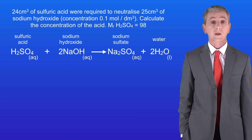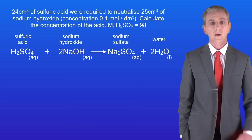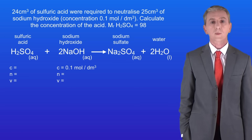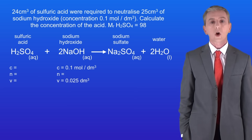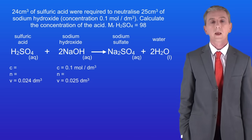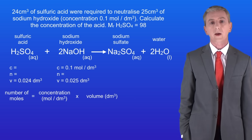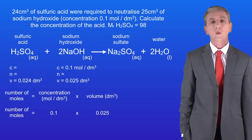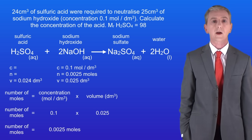Start by writing the letters C equals, N equals, and V equals under both the acid and the alkali like this. Now enter the information that we've been given. The concentration of the sodium hydroxide is 0.1 moles per decimetre cubed and the volume is 0.025 decimetres cubed. The volume of the sulphuric acid is 0.024 decimetres cubed. Multiplying 0.1 by 0.025 tells us that we've got 0.0025 moles of sodium hydroxide.